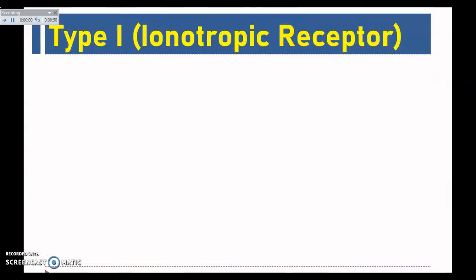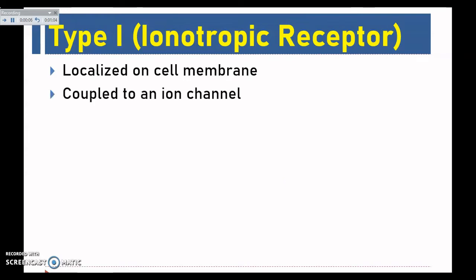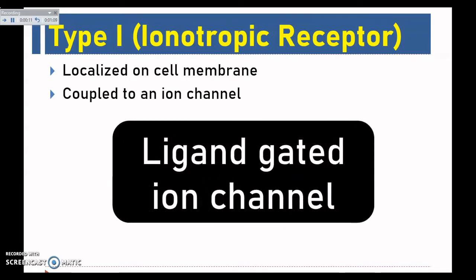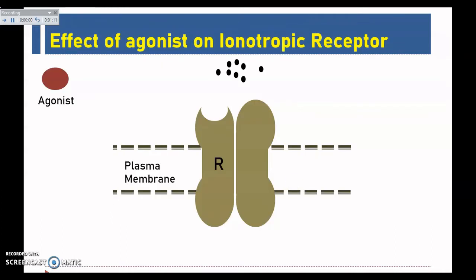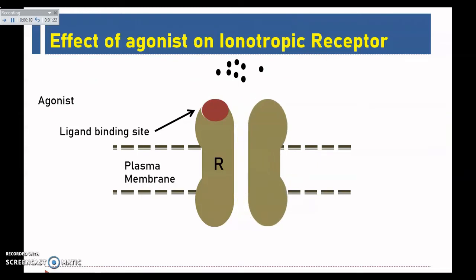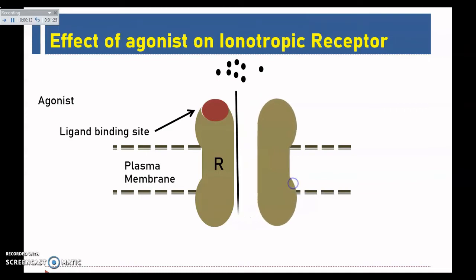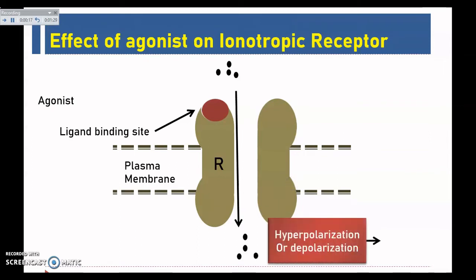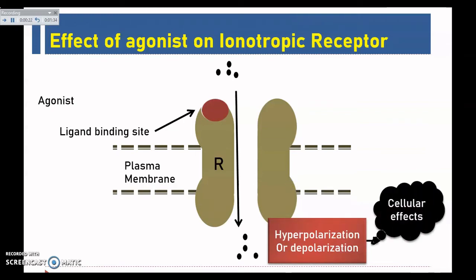Now this is the Type 1 ionotropic receptor. They are localized on the cell membrane and coupled to an ion channel. They are agonist-gated ion channels, also called ligand-gated ion channels. The agonist binds at the ligand binding site, occupying all sites on the receptor, causing a conformational change and subsequent flow of ions through the channel, resulting in hyperpolarization or depolarization and a cellular effect.